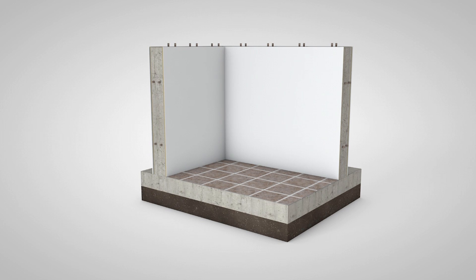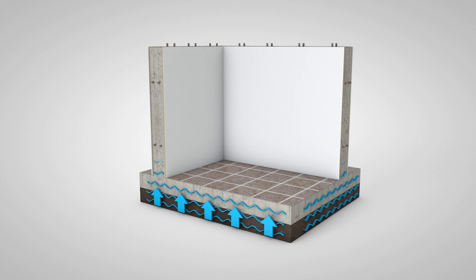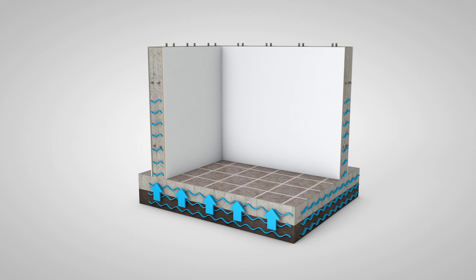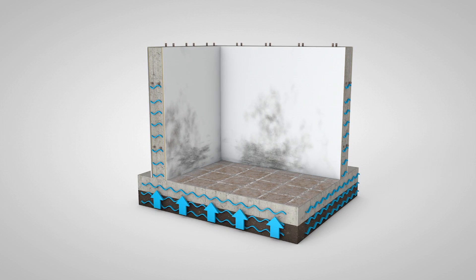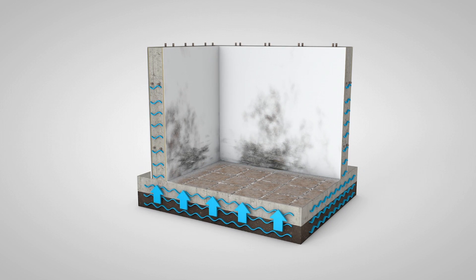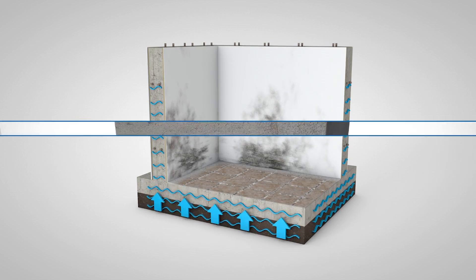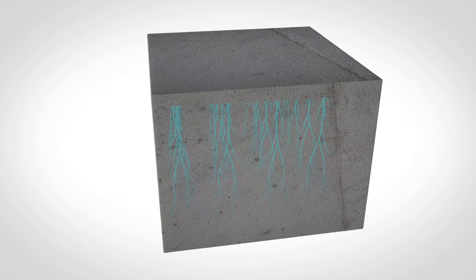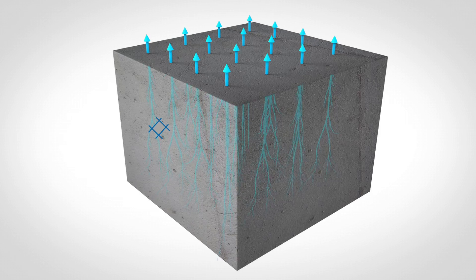But where does the humidity come from? Groundwater rises up through the walls and floor by capillarity, dissolving the salts in building materials. And these building materials, being porous, allow the water to rise.